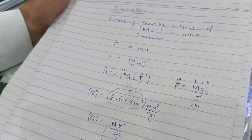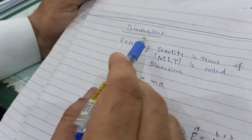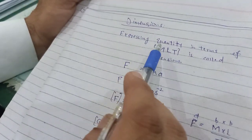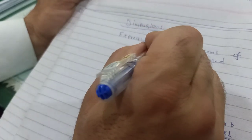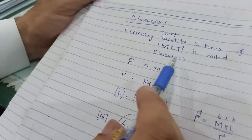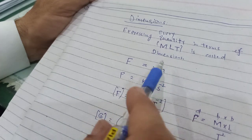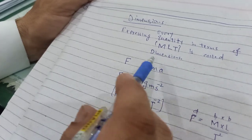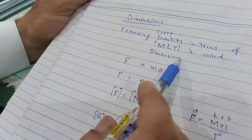Dear students, today's topic is Dimensions. Expressing every quantity in terms of mass, length, and time is called dimension. That is, if we have a derived quantity, we must know from which base physical quantity that derived quantity has been derived.